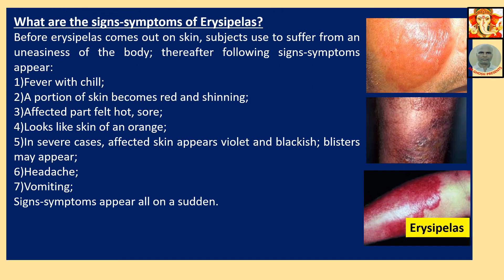What are the signs and symptoms of Erysipelas? Before Erysipelas comes out on the skin, subjects used to suffer from an uneasiness of the body. Thereafter, the following signs and symptoms appear: Number 1, fever with chill. Number 2, a portion of skin becomes red and shiny. Affected part felt hot and sore.